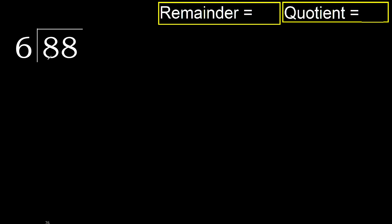88 divided by 6. Starting with 8: 8 is not less, so we work with 8. 6 multiplied by which number is nearest to 8 but not greater? 6 multiplied by 2 is 12, which is greater. 6 multiplied by 1 is 6, which is not greater. So 8 minus 6 is 2.